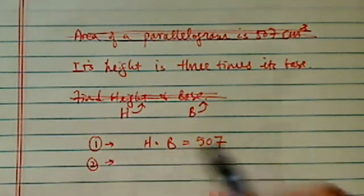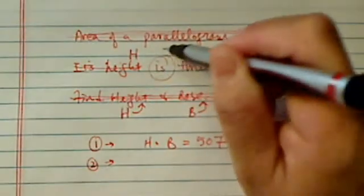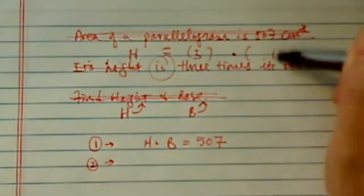The second sentence gives us the height, which is h, equals 3 times its base.